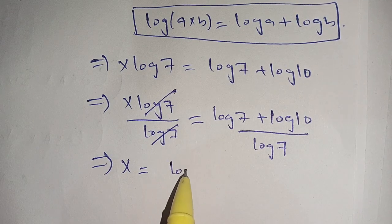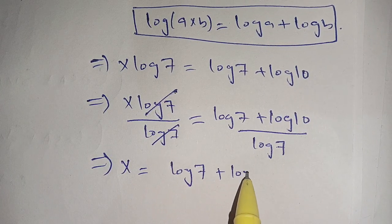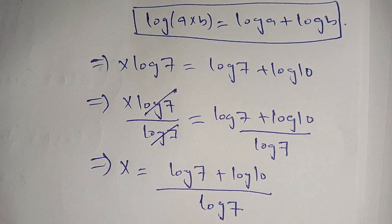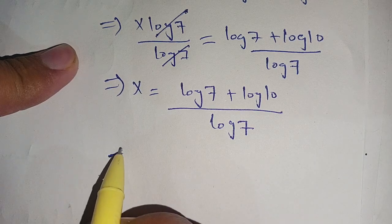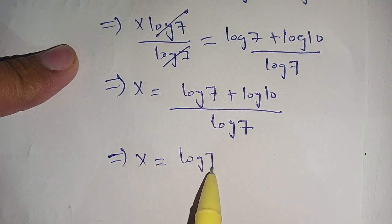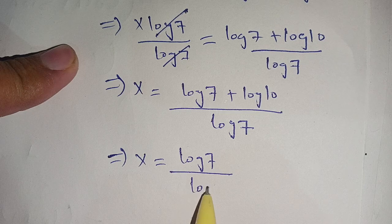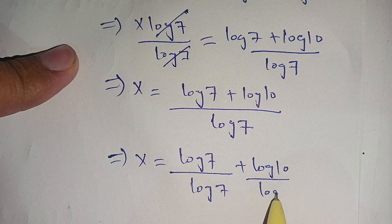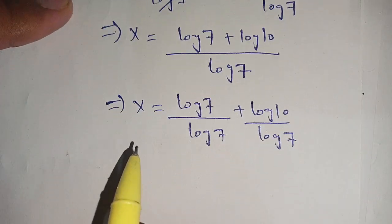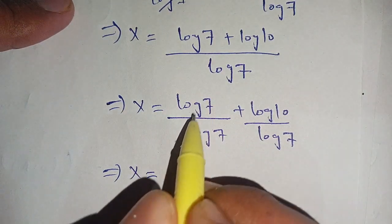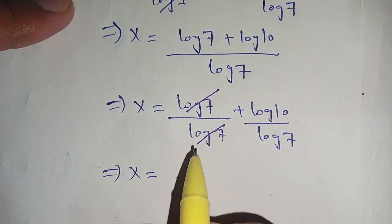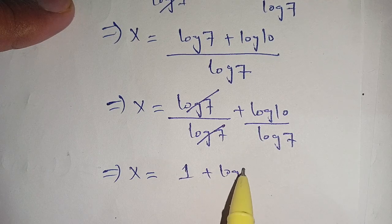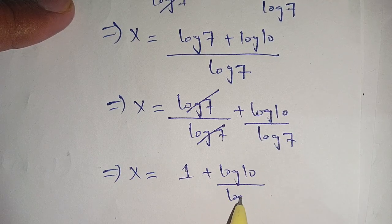This implies x is equal to log of 7 plus log of 10 divided by log of 7, which simplifies to x is equal to log of 7 divided by log of 7 plus log of 10 divided by log of 7. So x is equal to 1 plus log of 10 divided by log of 7.